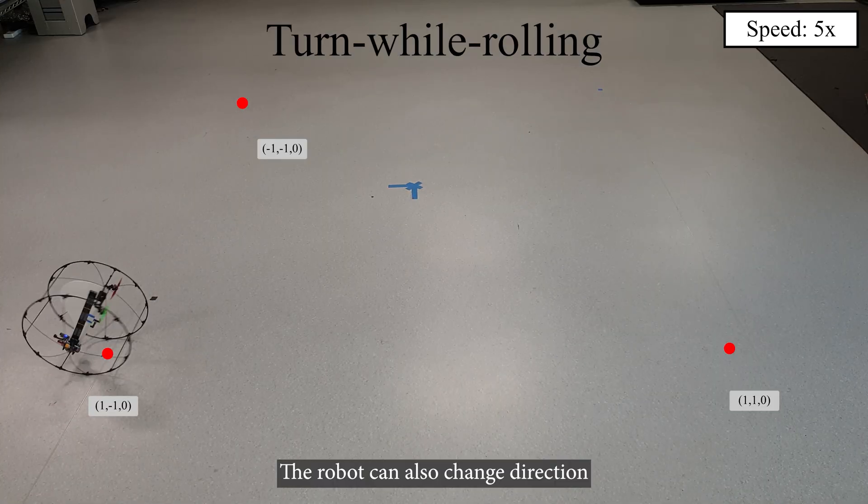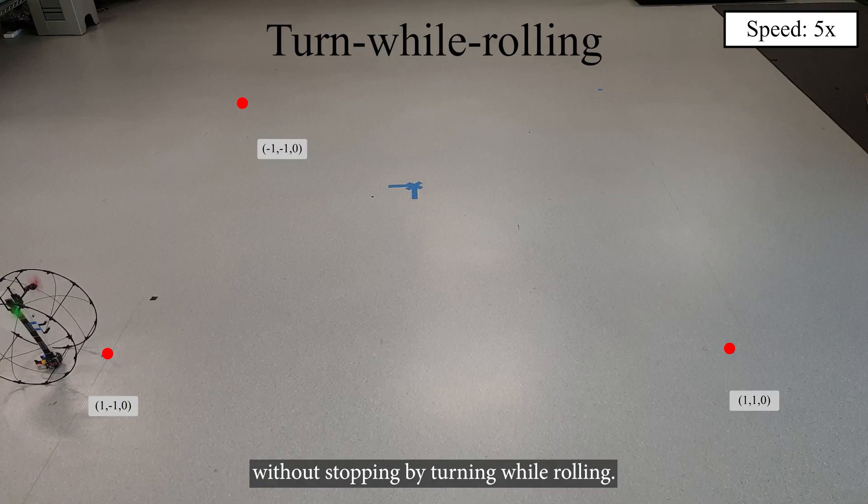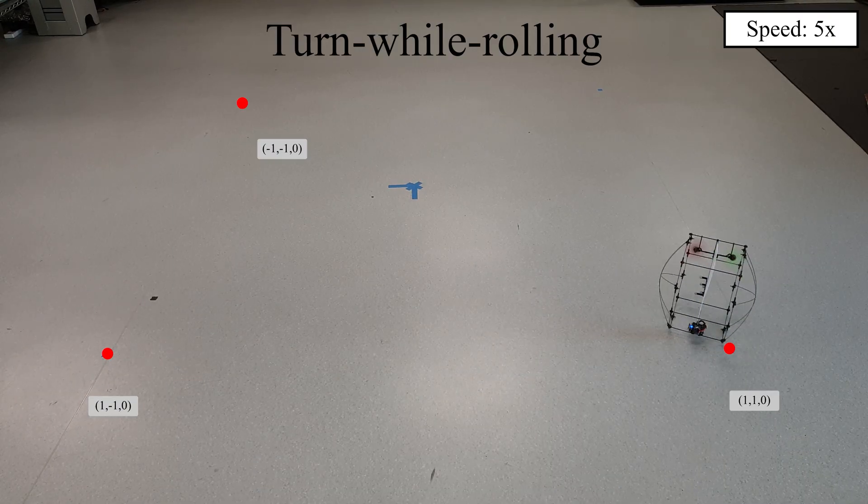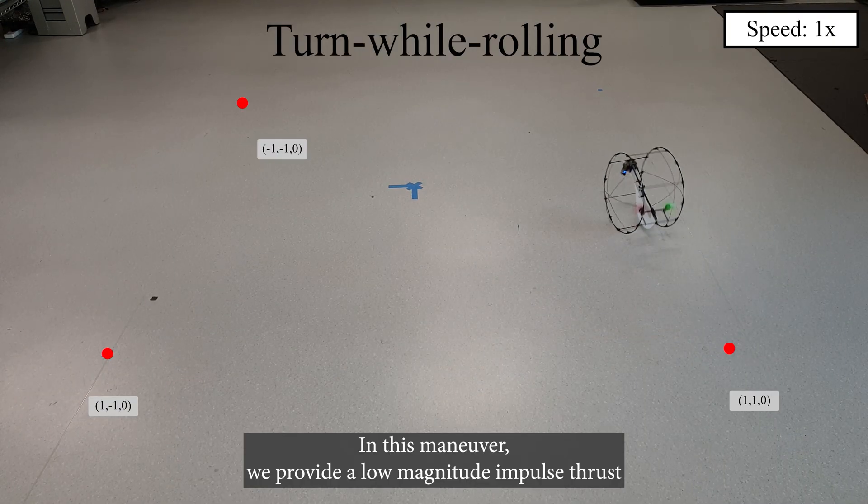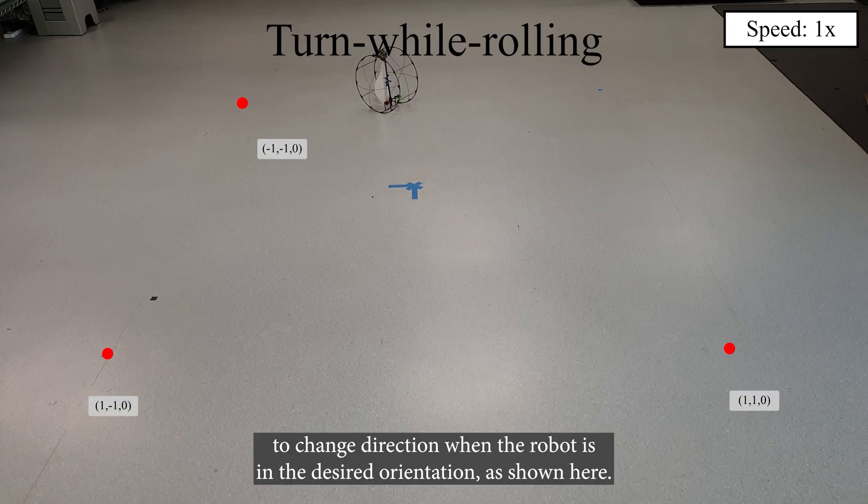The robot can also change direction without stopping by turning while rolling. In this maneuver, we provide a low-magnitude impulse thrust to change direction when the robot is in the desired orientation, as shown here.